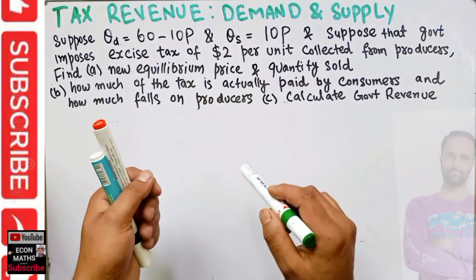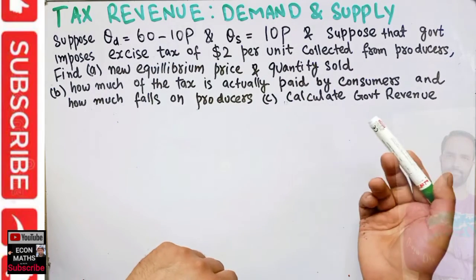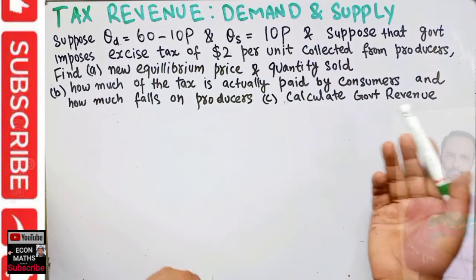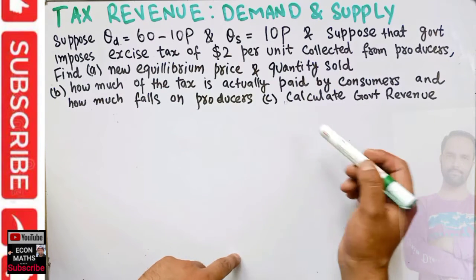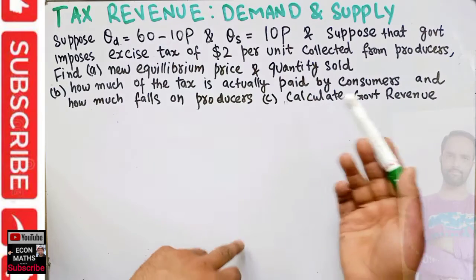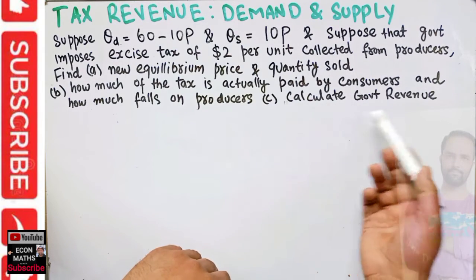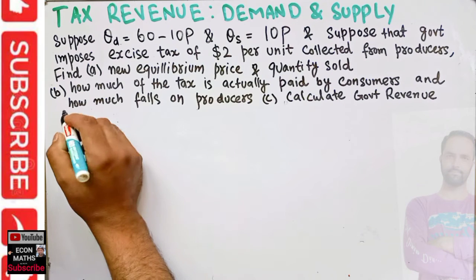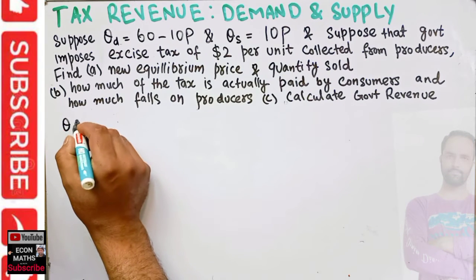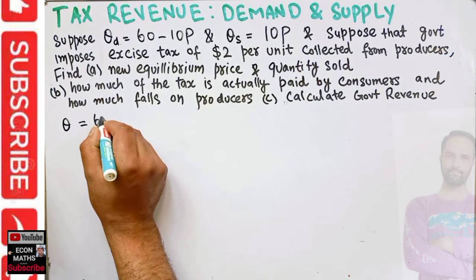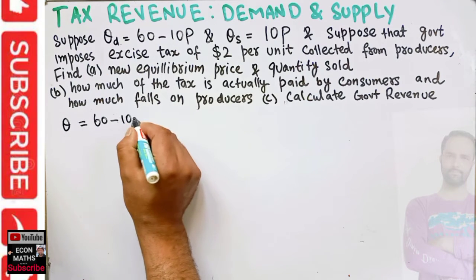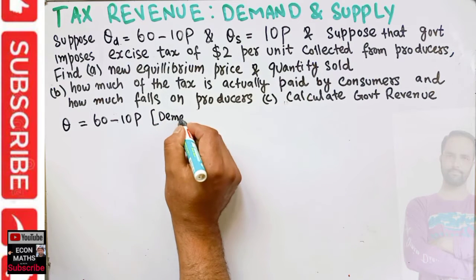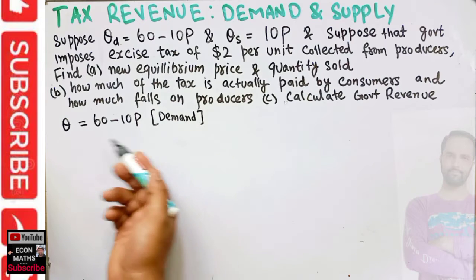We need to find the new equilibrium price and quantity, the impact of this per unit tax on consumers and producers, and also calculate government revenue — which I have added as an extra part not initially in the question. So what we are given: the quantity demanded is equal to 60 minus 10p, and this is our demand function.